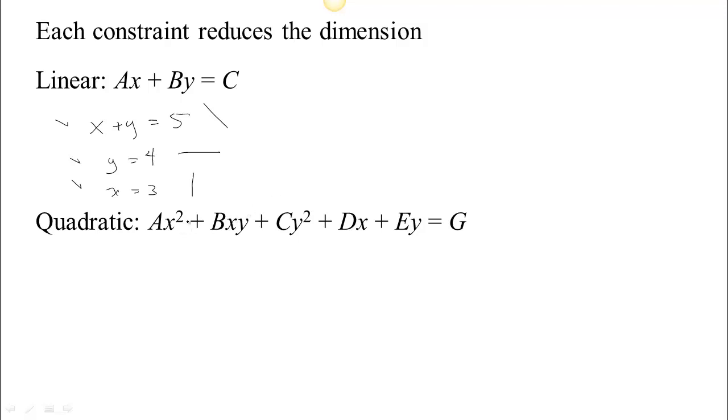So for example, in this case we might have, if a is 1, and b is 0, and c is 1, and g is 1, then we have just a circle of radius 1.